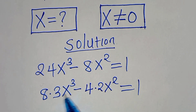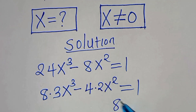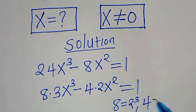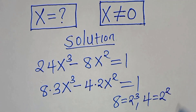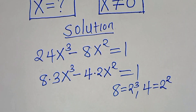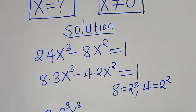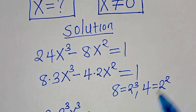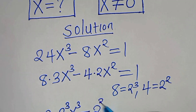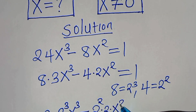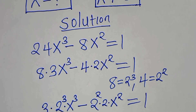Now, from here, we can express 8 as 2 to the power of 3, and we can express 4 as 2 to the power of 2. So, this implies that here we have 3 times 2 to the power of 3, then times x to the power of 3, then minus 4, which is 2 to the power of 2, then multiplying by 2, multiplying by x to the power of 2, this is equal to 1.